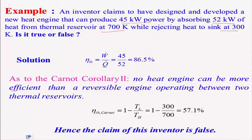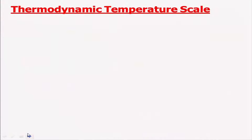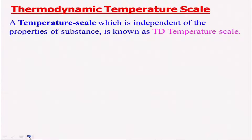By using this simple approach, one can find out whether an inventor's claim is true or not. Let us now see how we can apply the second law of thermodynamics to define a temperature scale. We will devise a temperature scale which is not dependent on the properties of the substance — what we call the thermodynamic temperature scale — which we have already discussed earlier.